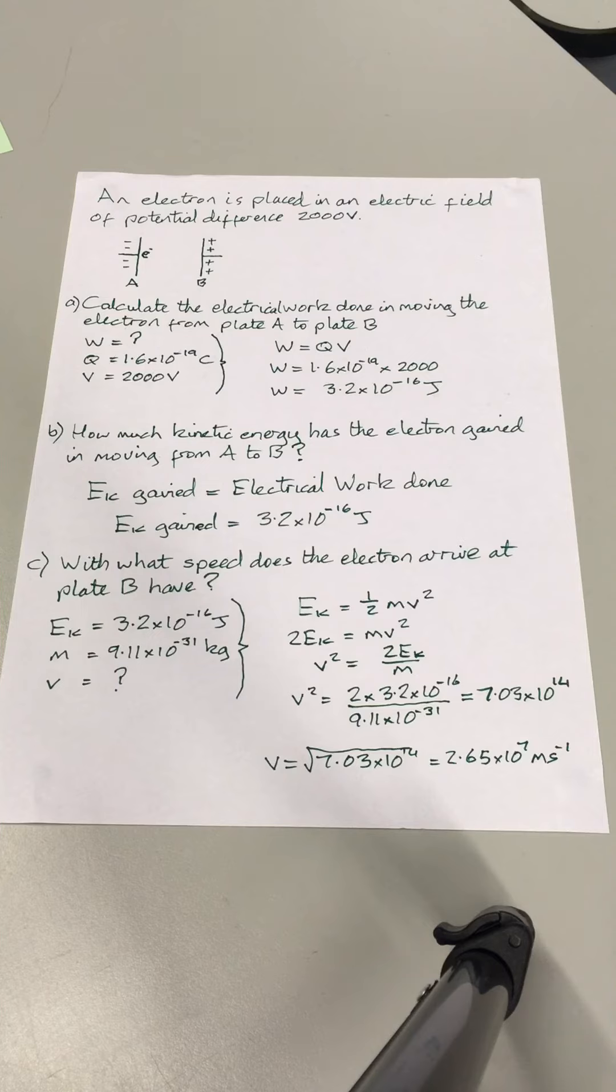Now, the speed increases as it moves from A to B, so it will nearly always be the final kinetic energy that you're using to work out the speed at plate B.